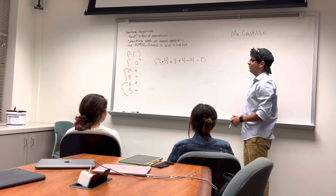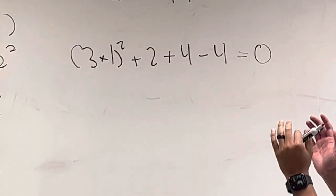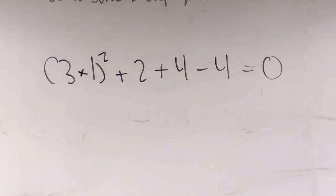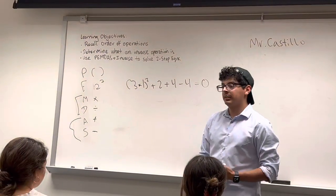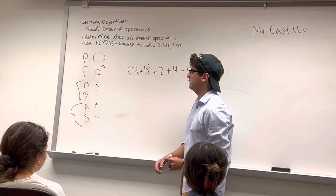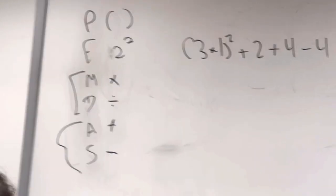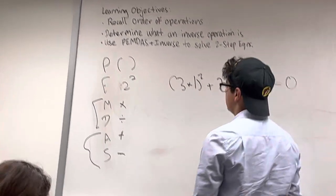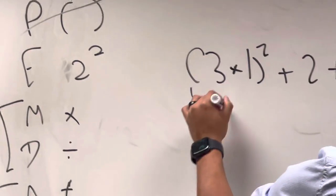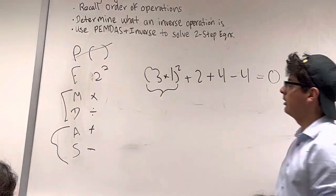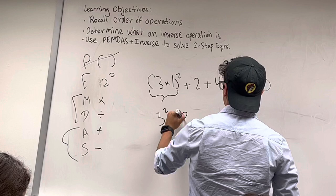This might look a little complicated at first. We have 3 times (1) to the square power plus 2 plus 4 minus 4. But using PEMDAS this becomes very easy. The way PEMDAS works is that we go in order of each one and we do the operations in that order. So we start off with the parentheses and we do everything that's inside it. So we cross off parentheses and we do this term right here. 3 times 1 is 3. So now we have 3 squared plus 2 plus 4 minus 4.